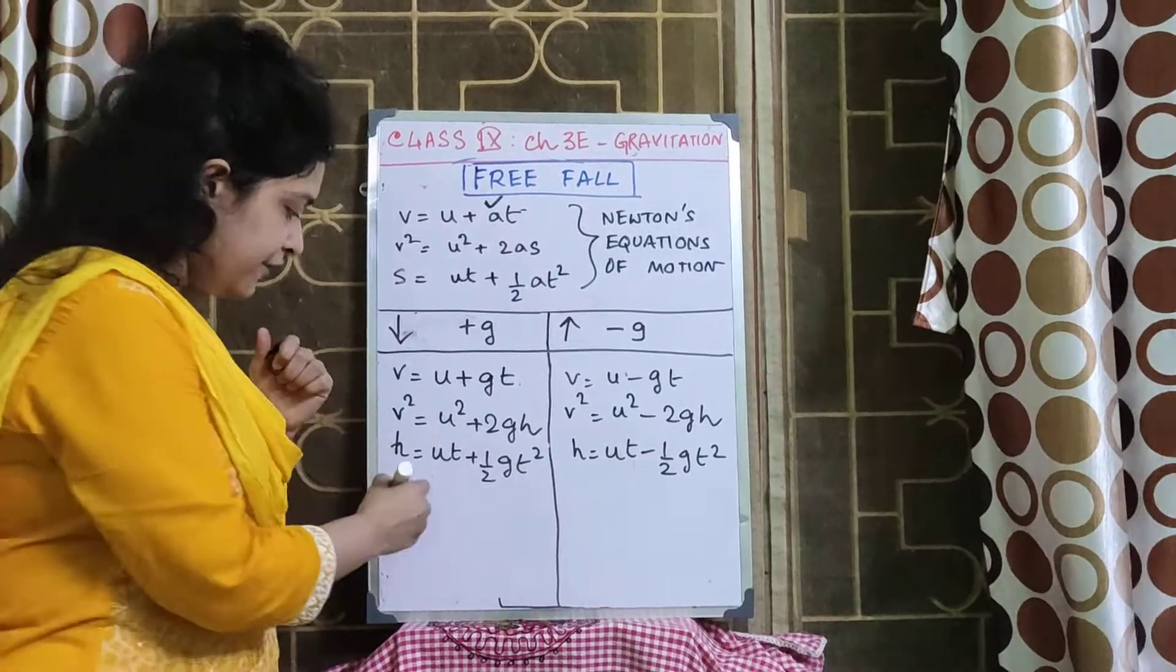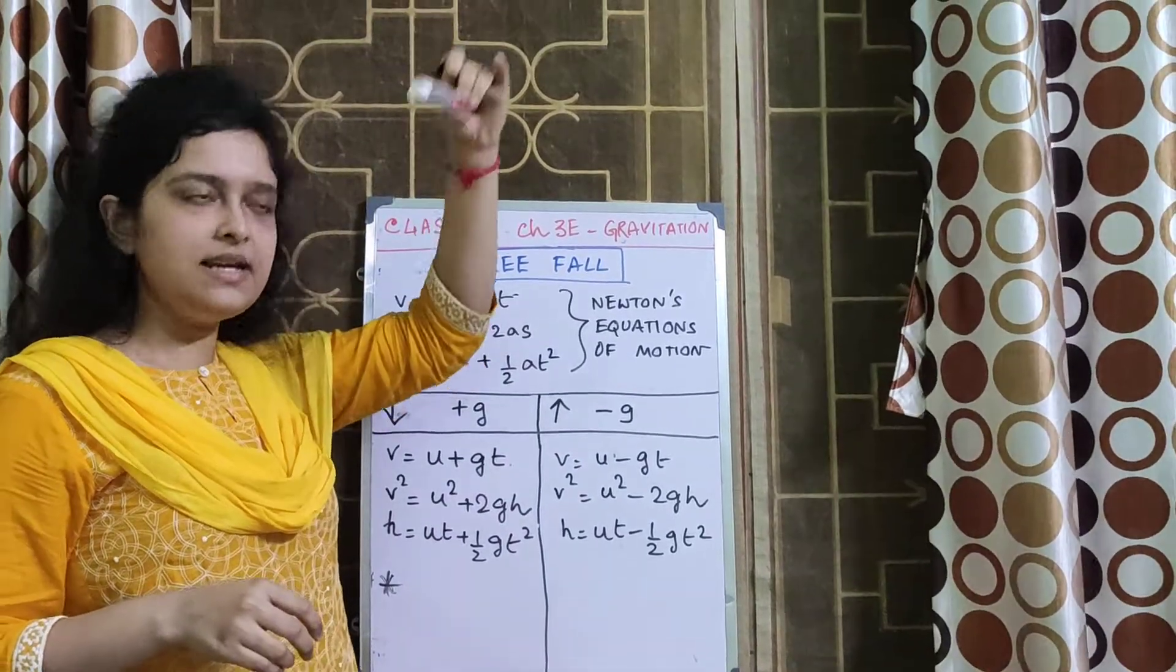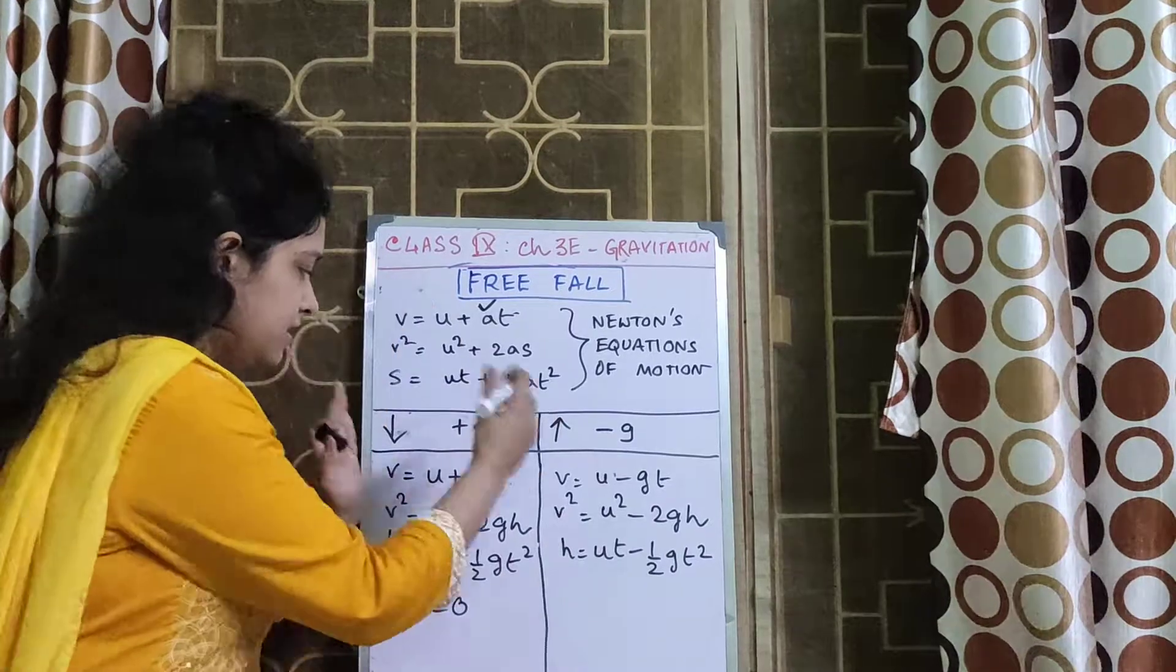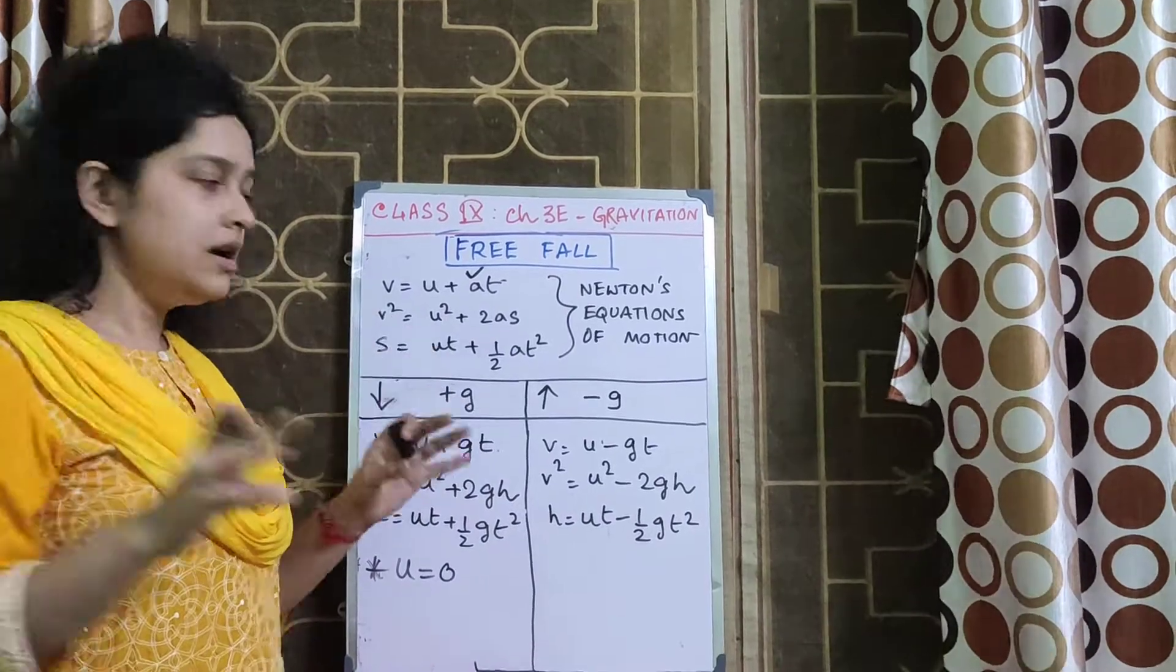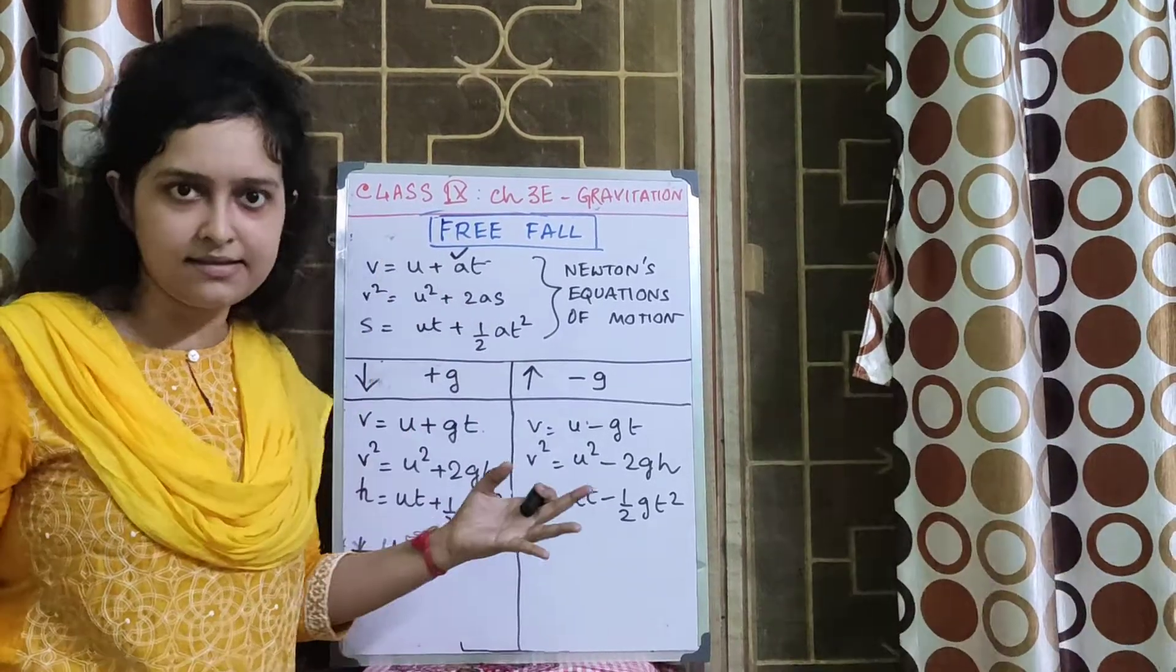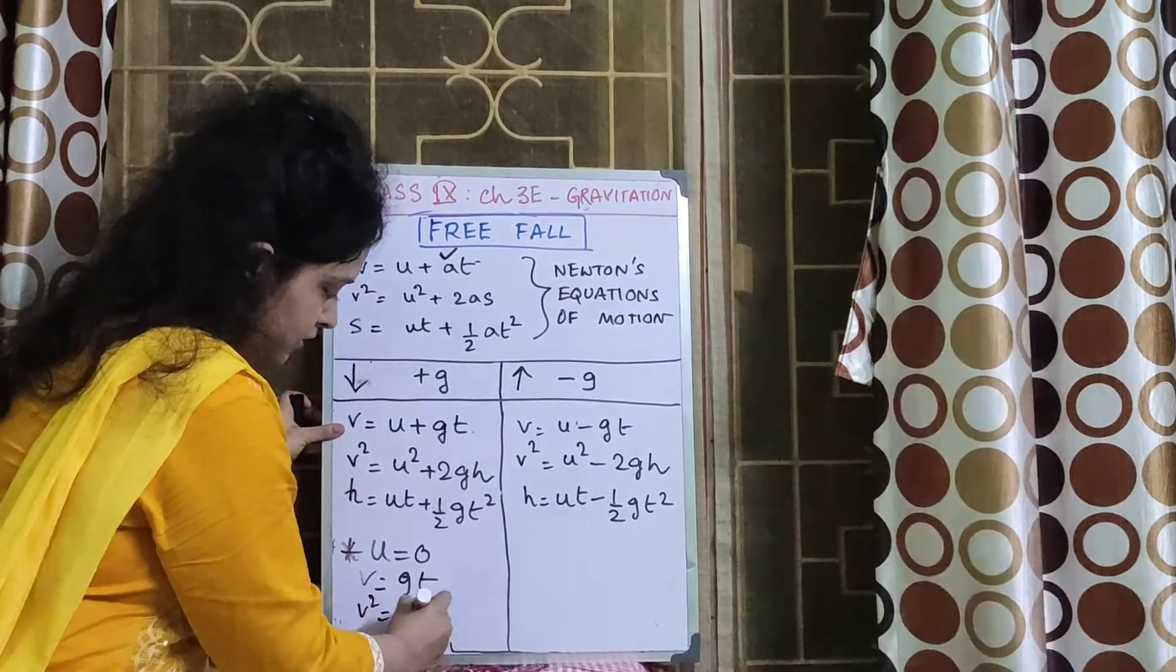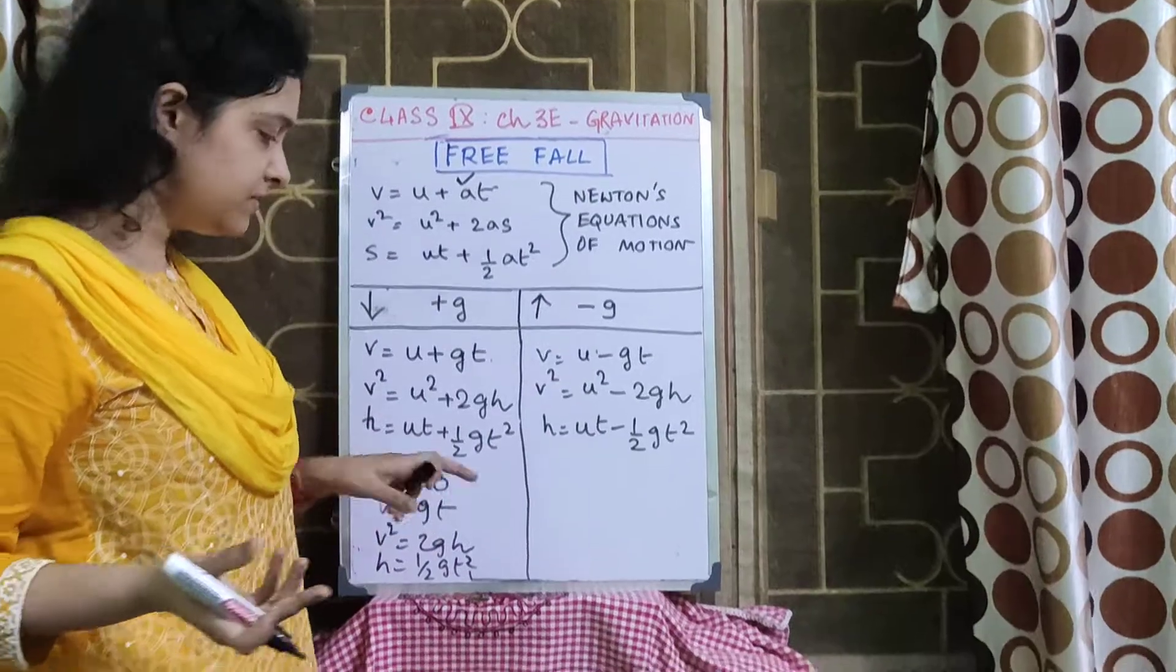Now what if when the body is falling, initially what if it is at rest? U equal to 0, initial velocity 0. Then how will the equations change? Just remember this. If you know initial velocity 0, that means U equal to 0. You don't need to memorize this. Just remember the forms. That means V will become GT, V square will become 2GH, H will become half GT square. Special case of this.